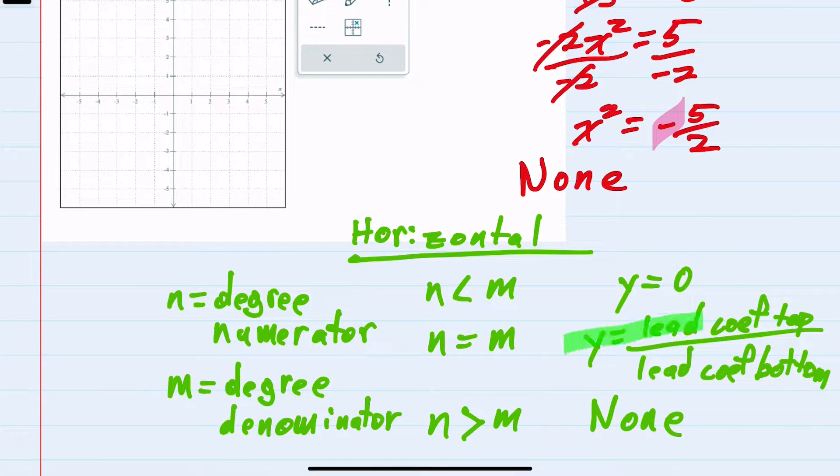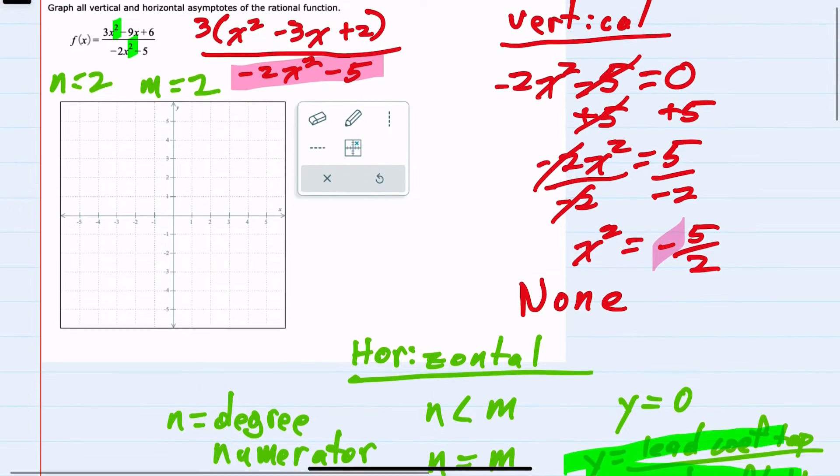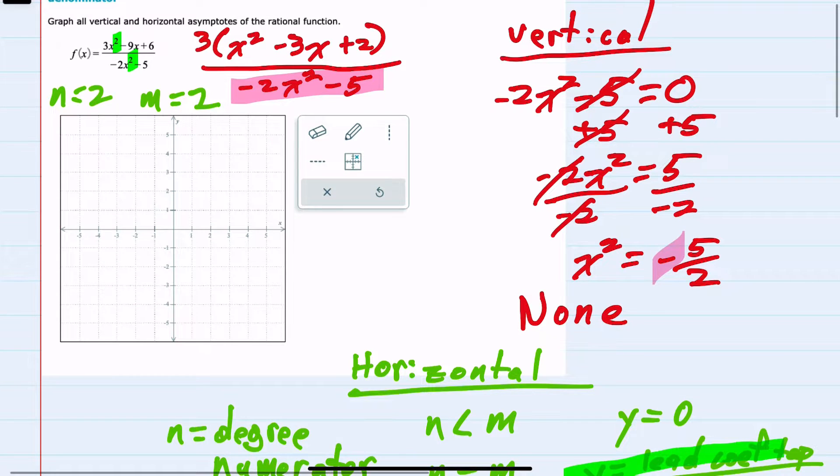That means that our horizontal asymptote will be the leading coefficient of the top over the leading coefficient of the bottom. So here, our horizontal asymptote is y equals... the leading coefficient in the numerator is 3, and the leading coefficient in the denominator is -2.